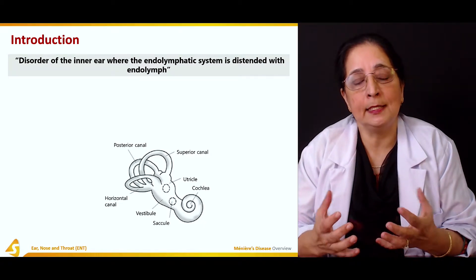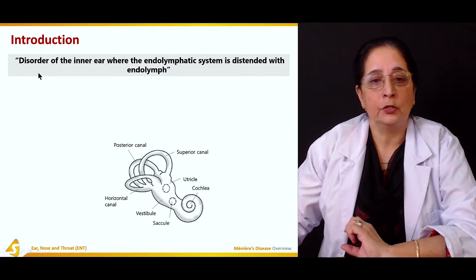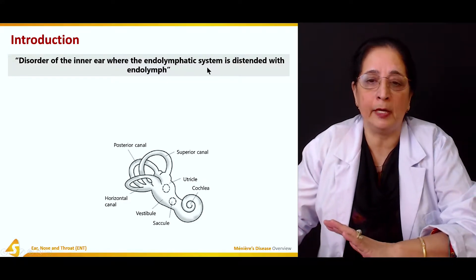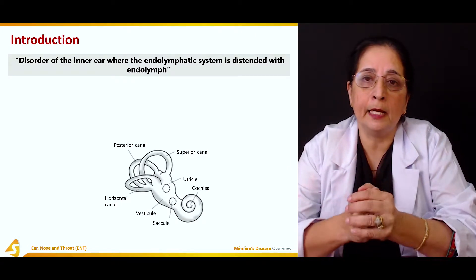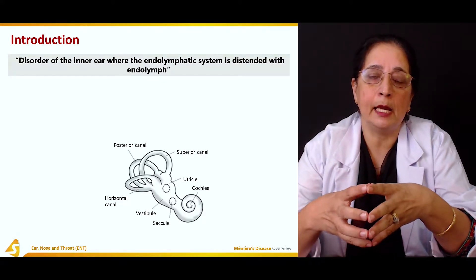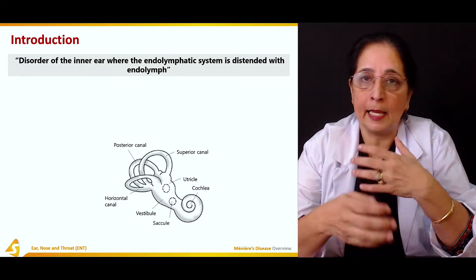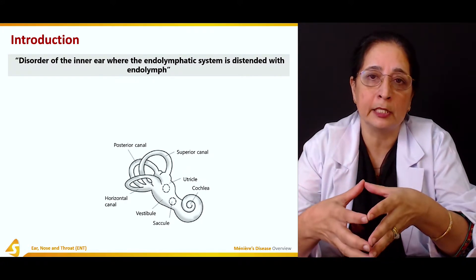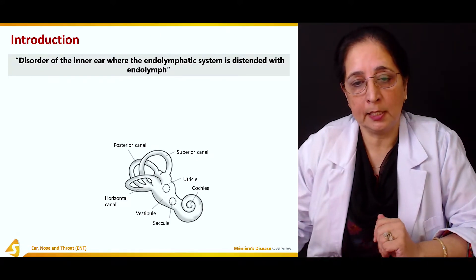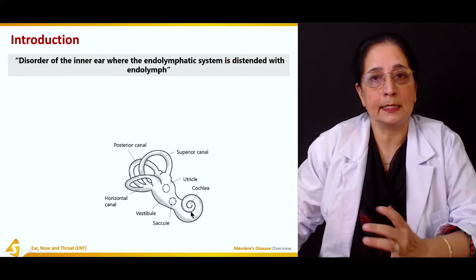In Meniere's disease, the fluid present in the endolymphatic system is increased, which leads to distension of the endolymphatic system. So Meniere's disease is a disorder of the inner ear where the endolymphatic system becomes distended with endolymph. Different factors lead to this increase — very commonly, allergies and infections cause increased secretion and increased production of endolymph.